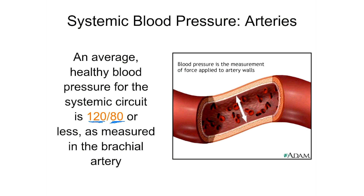When we talk about 120 over 80 being the normal healthy pressure, that is as measured in the brachial artery in your upper arm, which is why blood pressure cuffs are always placed there. Blood always moves from areas of higher pressure to lower pressure, so 120 over 80 is normal in the brachial artery.